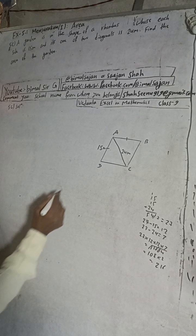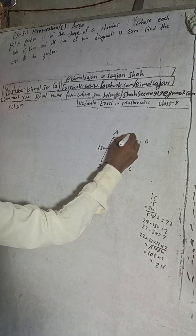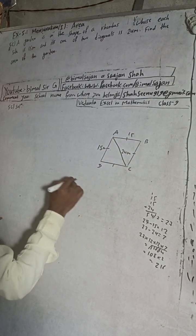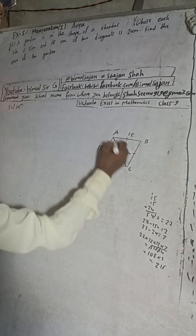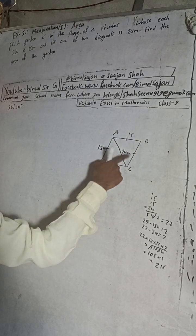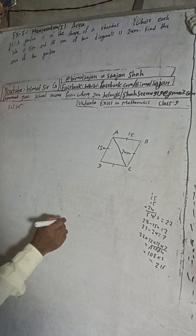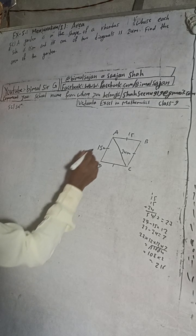In a rhombus all sides will be equal. This is 15, then this also will be 15, this also 15, this also 15. All will be equal. And one of the two diagonals, this diagonal or this diagonal, I will take this diagonal. Whatever you take, the answer will be same.